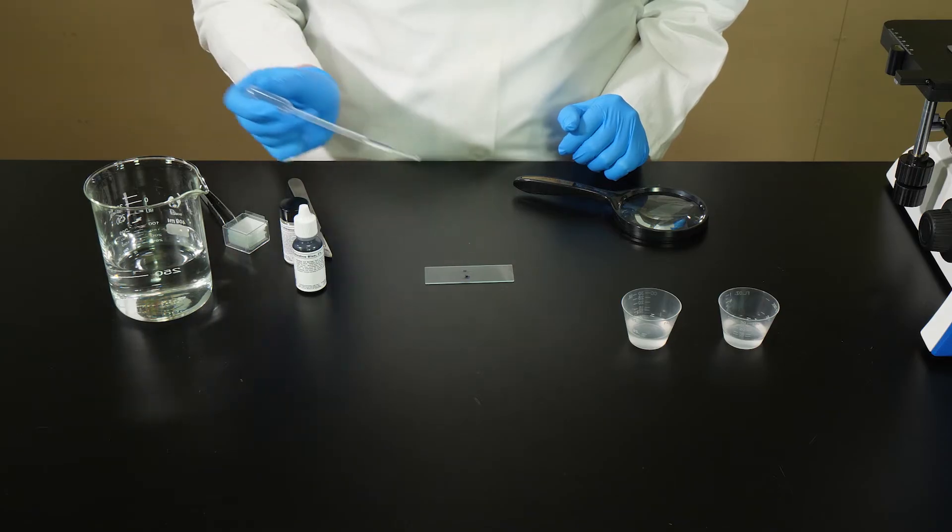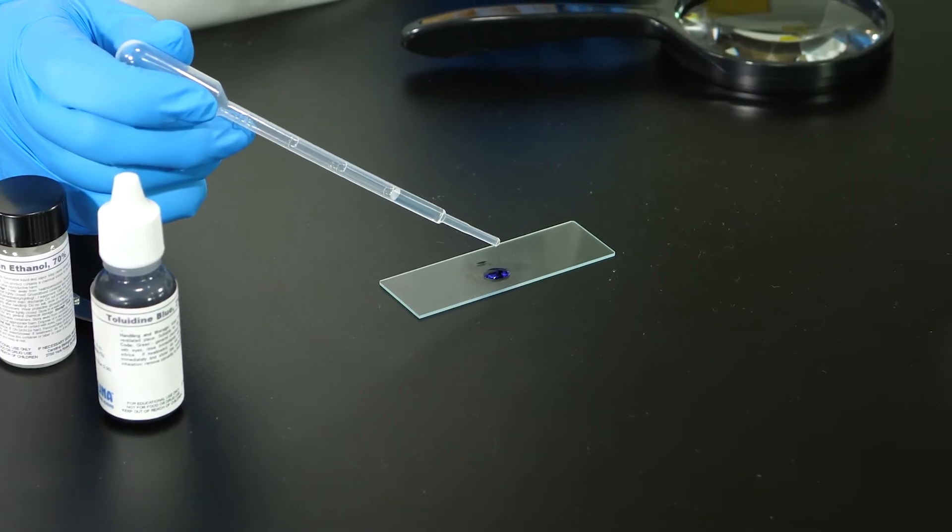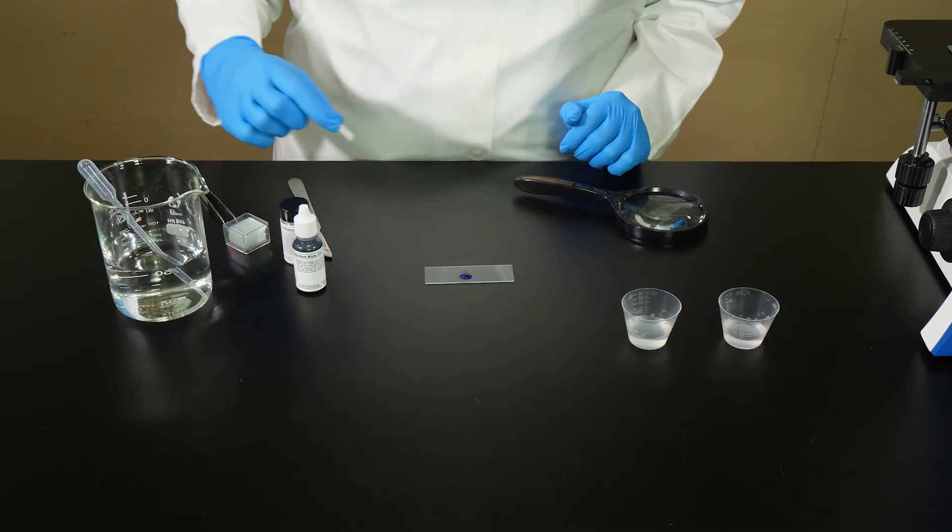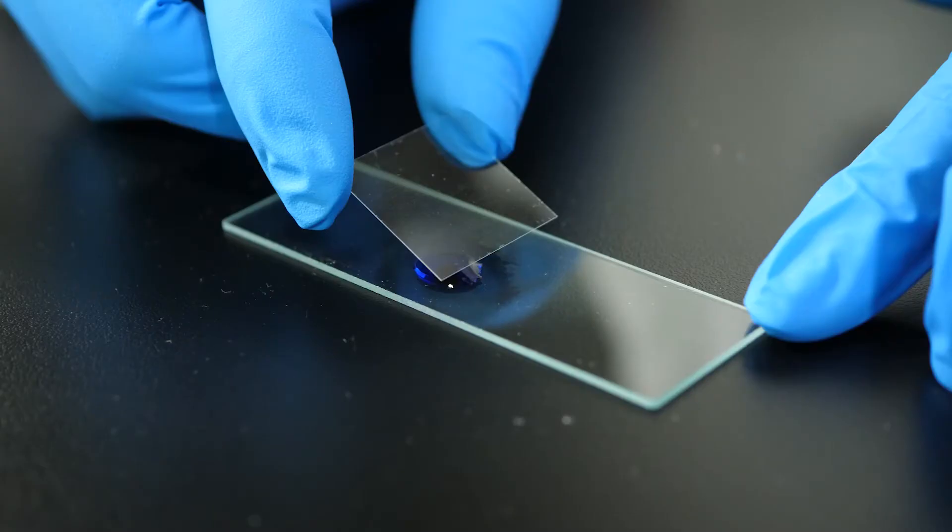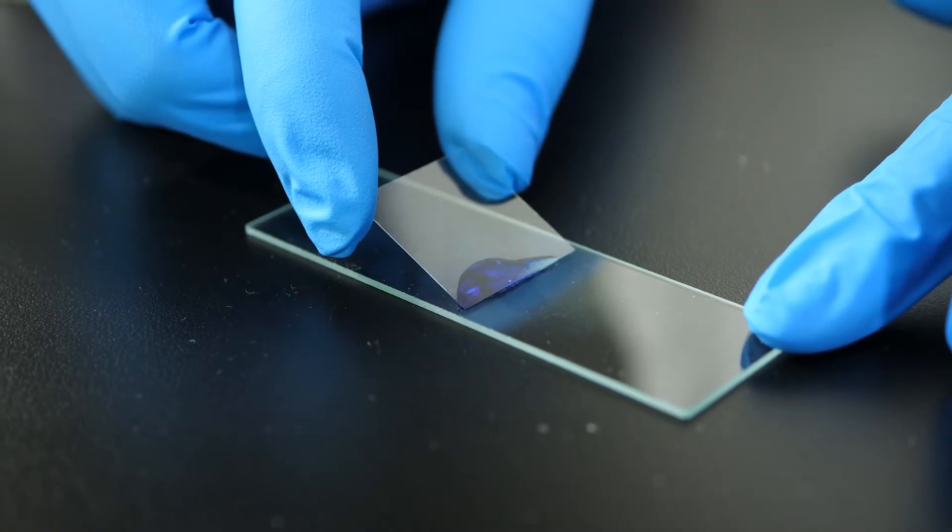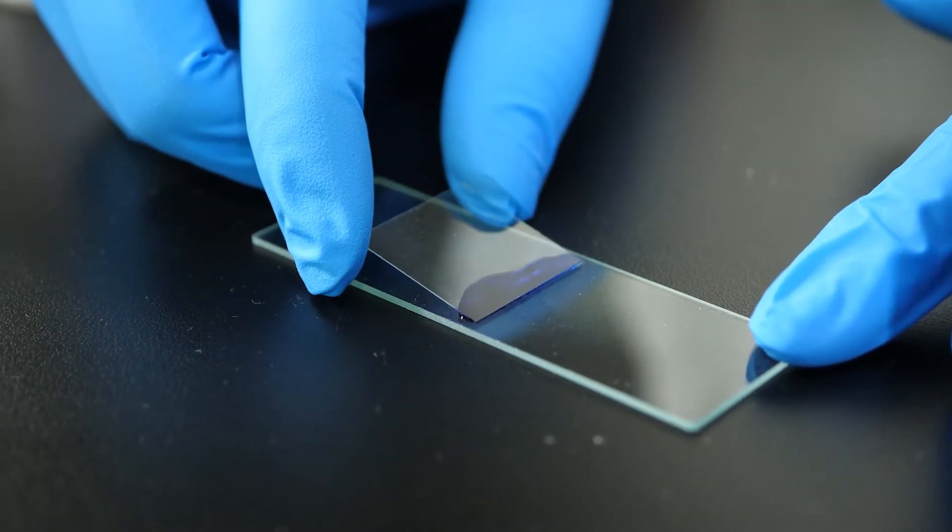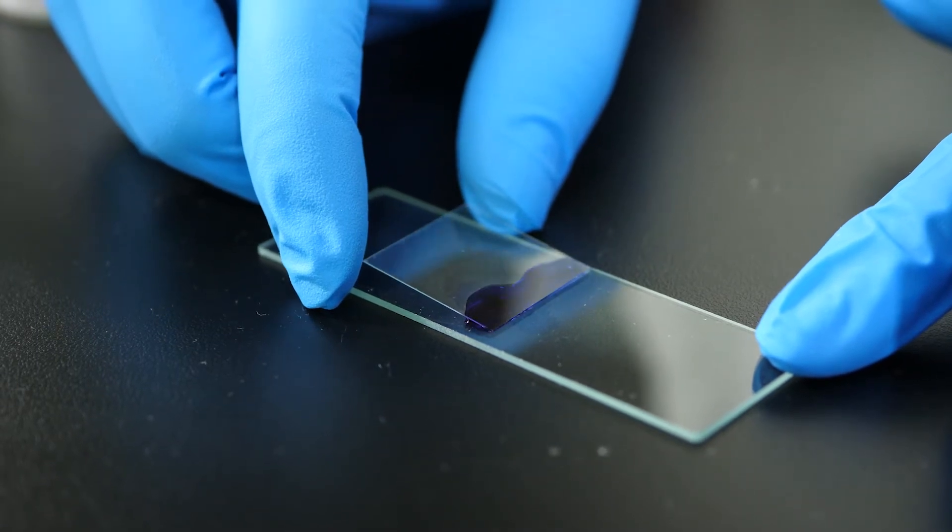Using a pipette, we add two drops of water to the sample and cover it with a glass cover slip. To keep from trapping air bubbles under the cover slip, we place one edge of the cover slip against the slide and gently lower the cover slip into place.